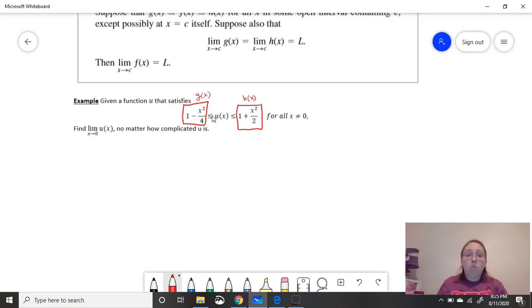So u is stuck in between g and h for all x's except for 0. Well, that's okay. It doesn't have to be. In our theorem, it said except possibly the value itself. So it doesn't have to be true at 0, but all around it, it is. Remember, one point does not mess up a limit. What messes up a limit is what it approaches. It has to approach all the points around what you're trying to do.